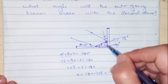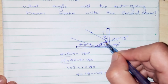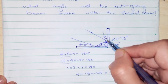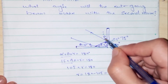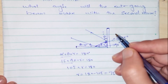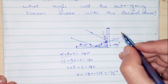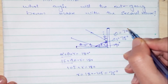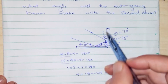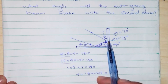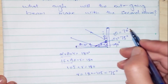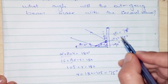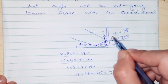Now looking at the second mirror surface, this is the incident angle and this is the reflected angle. The incident angle equals the reflected angle, so this theta will also be equal to 75 degrees. Therefore, the angle the outgoing beam makes with the second mirror is equal to 75 degrees, and this is the required answer.